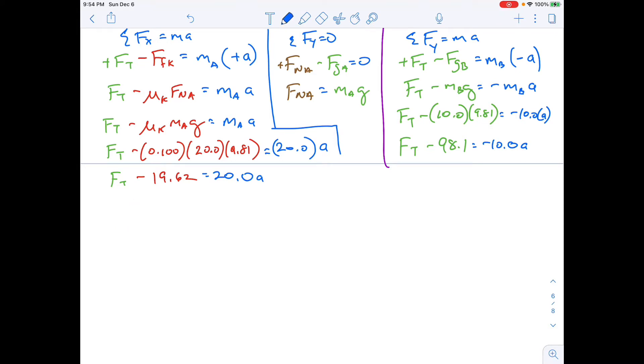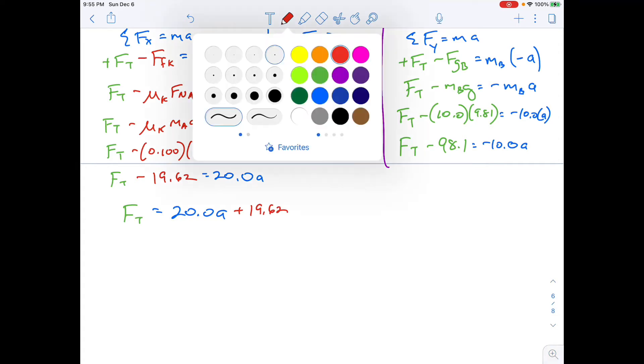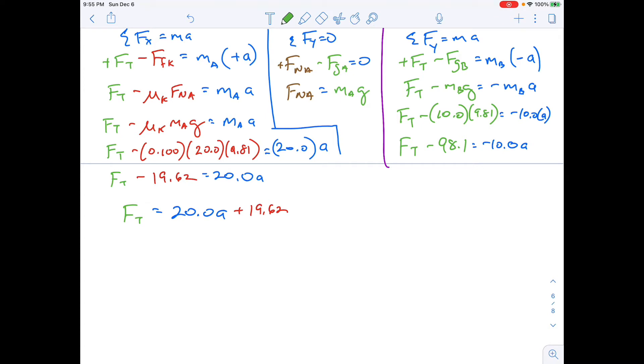So you have to use your head and just be aware of that. What I'm going to do here is I'm going to solve for FT here. And I'm going to say that's equal to 20.0 A plus 19.62.